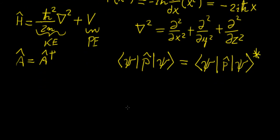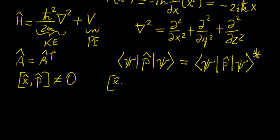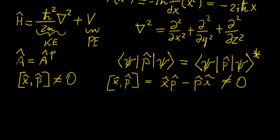Now I want to show an example of how to find the commutator of two operators. I'm going to show that the commutator of the position operator with the momentum operator in one dimension is non-zero. We know that [x̂, p̂] equals x̂ p̂ minus p̂ x̂, and I'm going to prove that this is not equal to zero — so they do not commute.